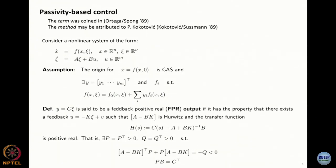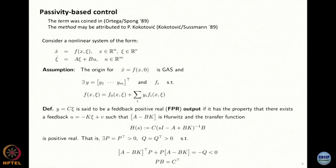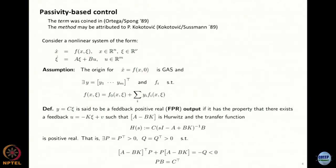Once you bring xi to zero, what happens to the zero dynamics — the dynamics when xi equals zero? They might be unstable, and there is nothing you can do through the control input a priori, because there is no control input there. So these researchers came up with a method that applies to a certain class of systems for which f satisfies certain properties, and you need to lay out assumptions and definitions from the paper to understand what they did.